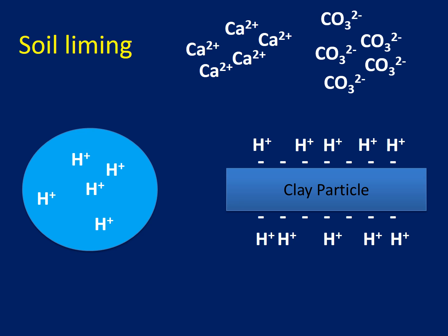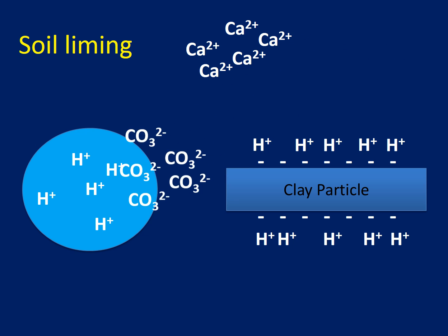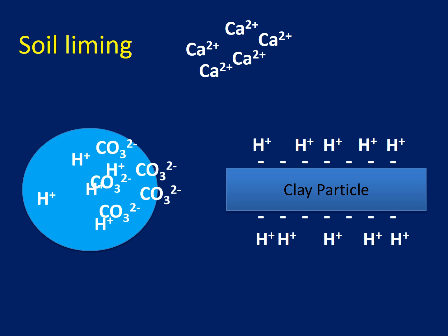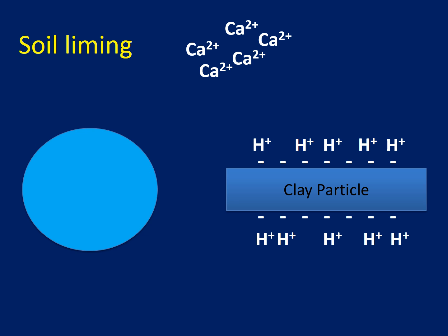So this is an animation that's going to show what's actually taking place in the soil. We've got our two species — our calcium and our carbonate. The first thing that's going to happen is the carbonate is going to react with the hydrogen that's already present in the soil moisture, and it's going to neutralize it. That material is now neutralized.